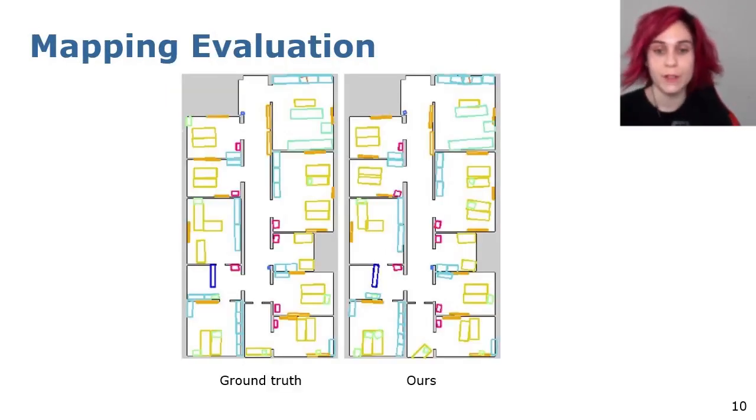We evaluated our constructed maps by matching them against a ground truth map extracted with a highly accurate 3D terrestrial laser scanner and annotated manually. The intersection over union scores between the ground truth map and our maps are high while precision and recall are close to 1, indicating a low number of false positives and false negatives.